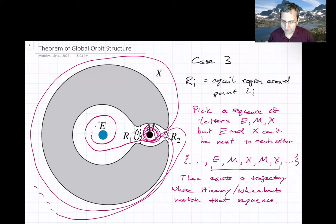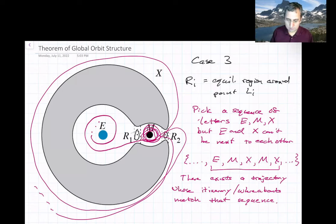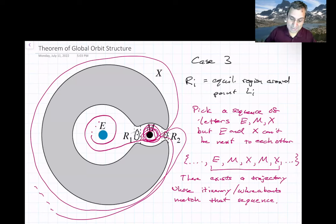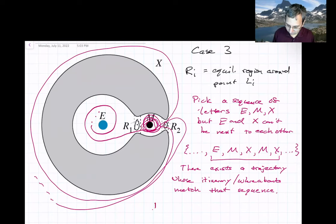This is an informal notation. There's a more formal notation that really describes what's going on. It's not just as simple as writing the letters corresponding to the main realms. We have the Earth realm represented by E, M for the region around the Moon, and X for the exterior. The boundaries are the equilibrium regions between them. That's the informal version of the theorem of global orbit structure.